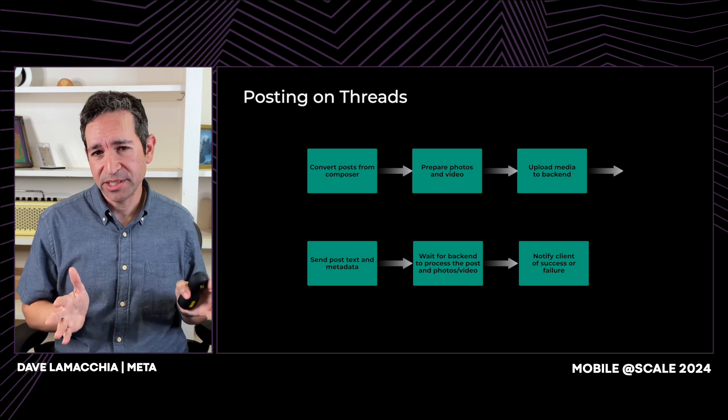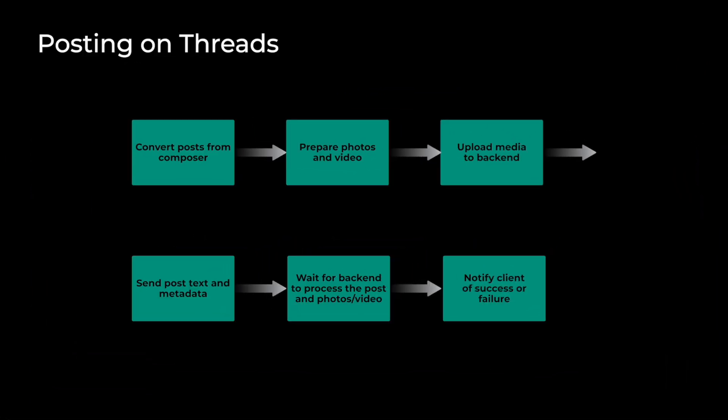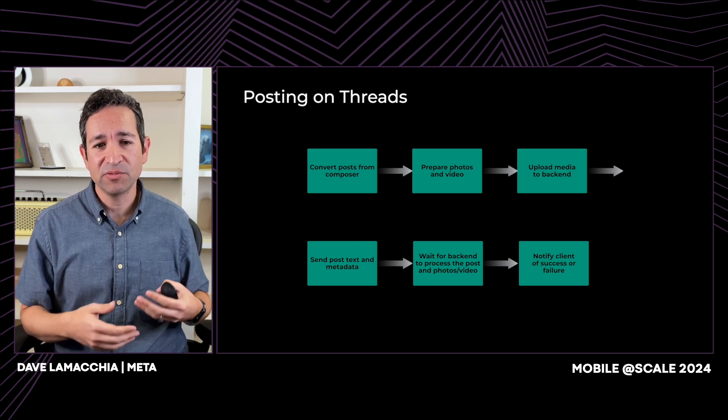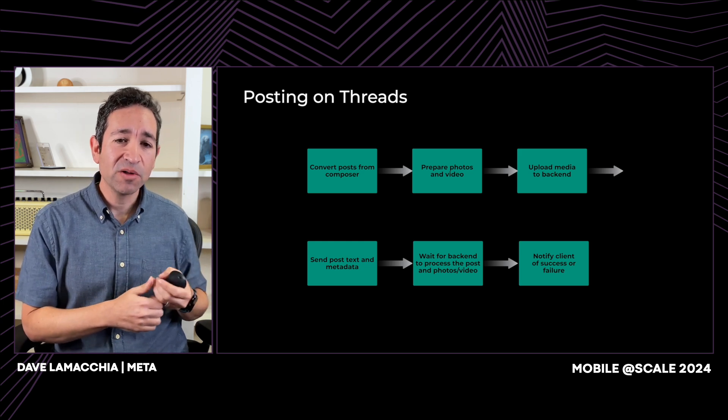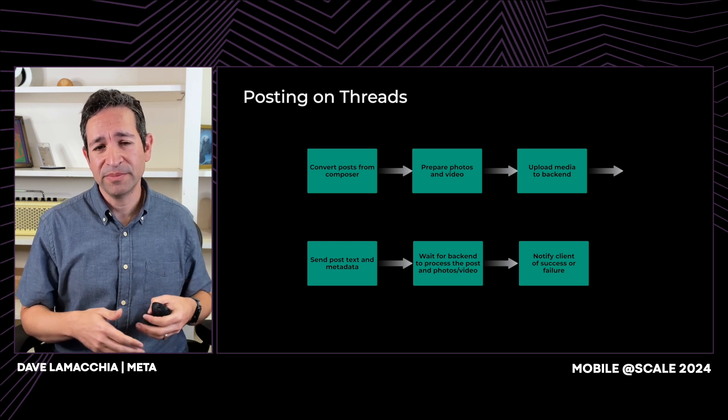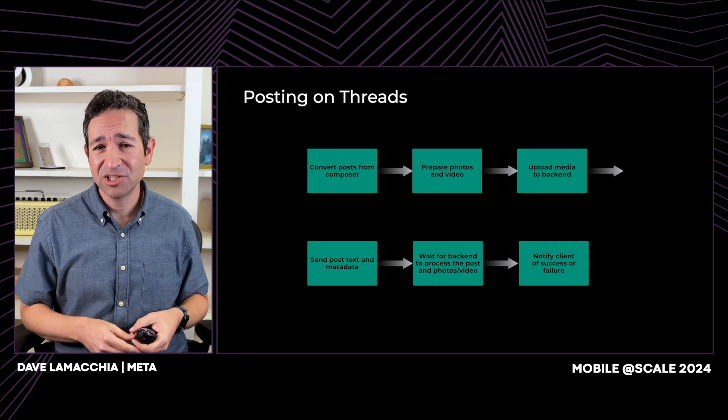One last improvement around publish reliability was making our existing publishing pipeline less synchronous. For example, instead of waiting until the user hits post to transcode video or prepare photos, we now do that a little sooner. We also migrated the entire publishing pipeline to Swift, which allows us to prevent data races and reduce crashes by adopting strict Swift concurrency. Early data shows the Swift version is driving improvements in CPSR and publish reliability by being more stable.